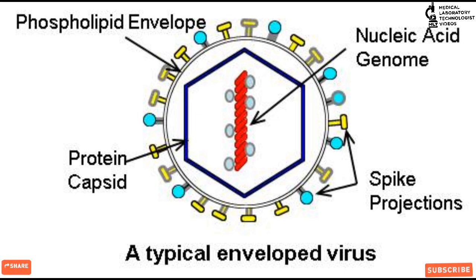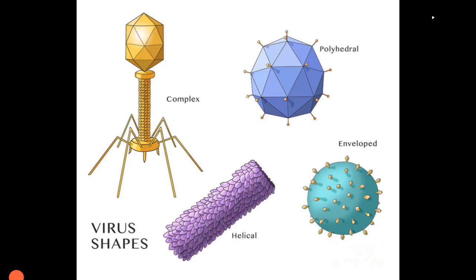Now we will see the shapes of viruses — icosahedral, helical, and complex. In the diagrams you can see: complex shape is neither helical nor icosahedral; polyhedral shape represents icosahedral; helical is shown as elongated; and an enveloped virus with spikes is also shown.